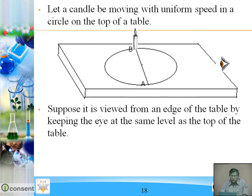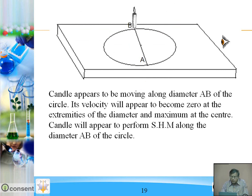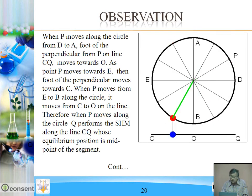See one more example of SHM. A candle will be moving with uniform speed in a circle on the top of a table. If we observe the motion of the candle from the level of the table, the candle moves along the circle but it appears to move along the diameter. The candle appears to perform SHM along the diameter AB of the circle. Its velocity will appear to become zero at the extremities of the diameter and maximum at the center, which is the mean position.